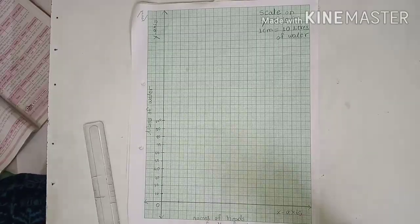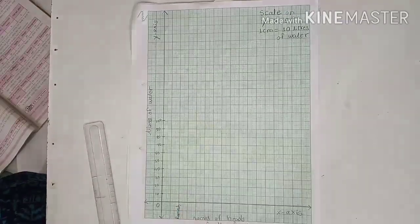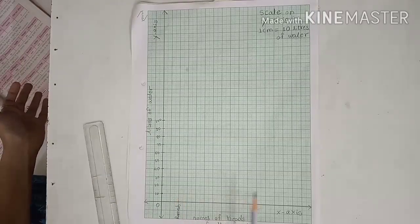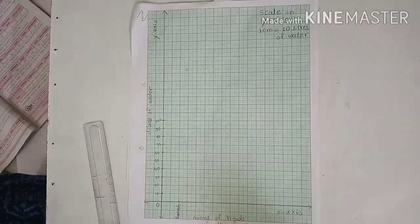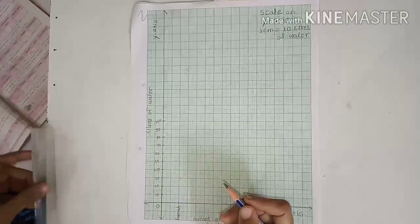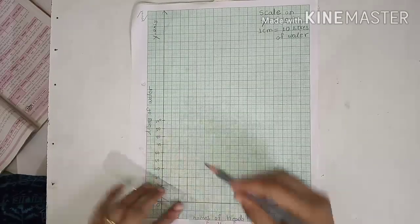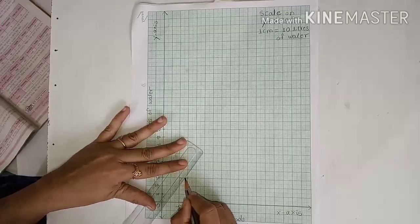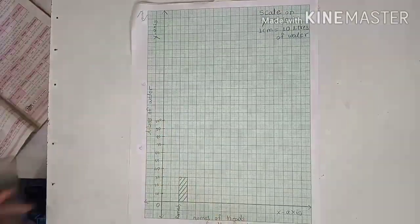First name is Ramesh. We can write this vertical or horizontal. Now we have to take equal distance between two graphs or two bars. So first Ramesh, his family used 30 liters of water. So 10, 20, and 30. Here 10, 20, 30. First bar drawn.